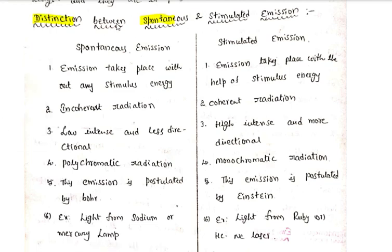The topic is: distinguish between spontaneous and stimulated emission — the difference between the two types of emission. If you have some notes, check the description box and click on the download link. Please subscribe for more updates and click the bell icon. I have a few questions for 4 marks on this topic.